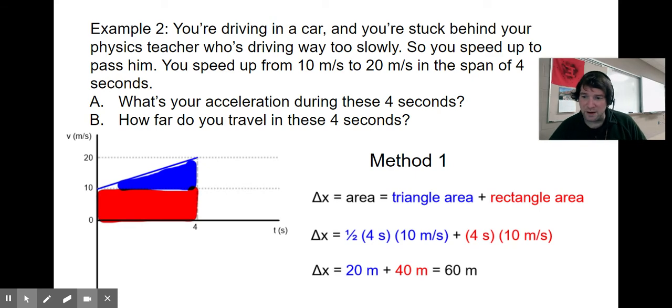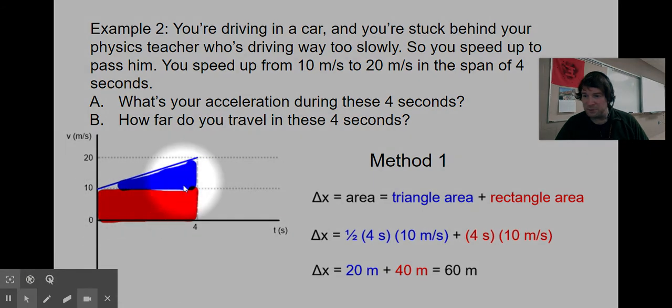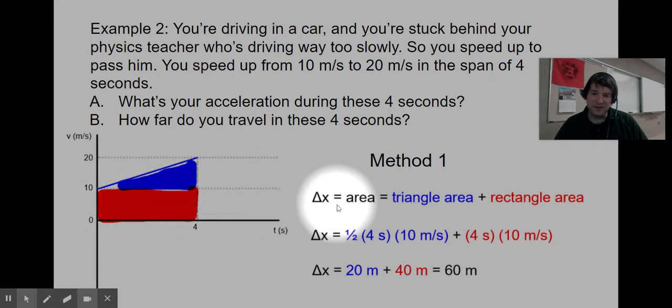Method one: I could look at that area as a triangle sitting on top of a rectangle. The whole area, blue triangle on top of red rectangle. The displacement delta x is that whole area. I just have to add together the area of a triangle and the area of that rectangle.